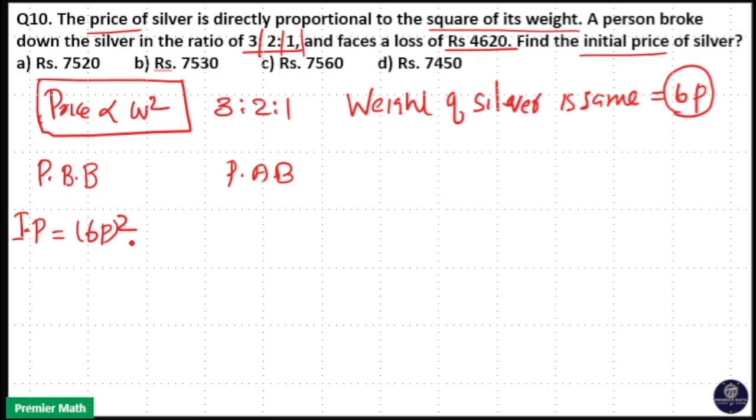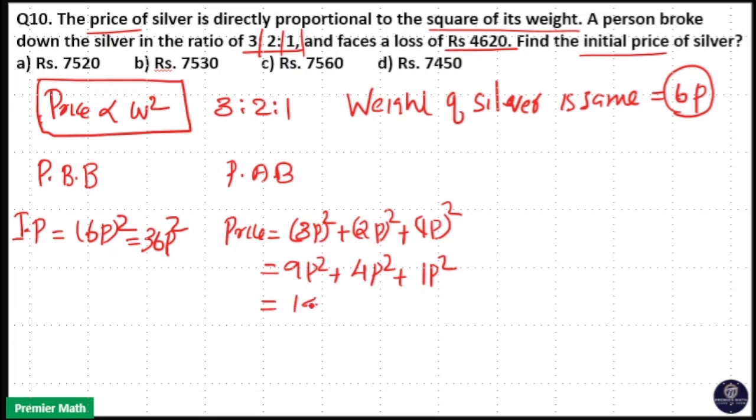Price after breaking is equal to 3 part square plus 2 part square plus 1 part square, that is equal to 9 part square plus 4 part square plus 1 part square, that is 14 part square.